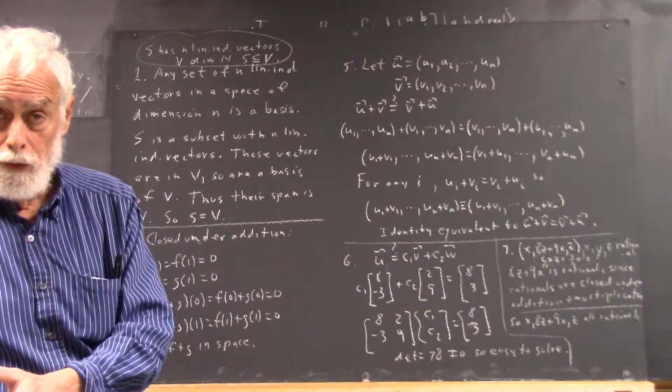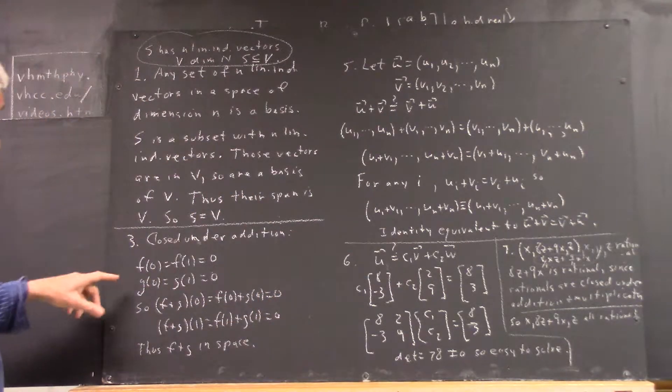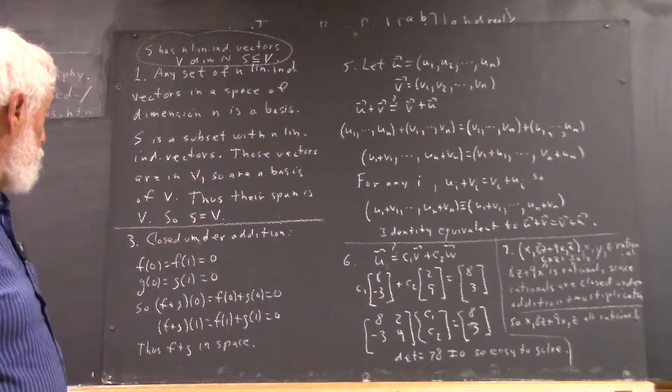The sum would be 0 when x is 0 and 0 when x equals 1. So we write that down, and that is closure under addition.